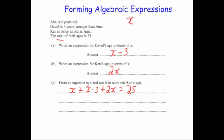Let's simplify. x plus x is 2x, plus 2x is 4x. So we've added the x's up to get 4x, but we've still got minus 3 on the left hand side, and that equals 25.